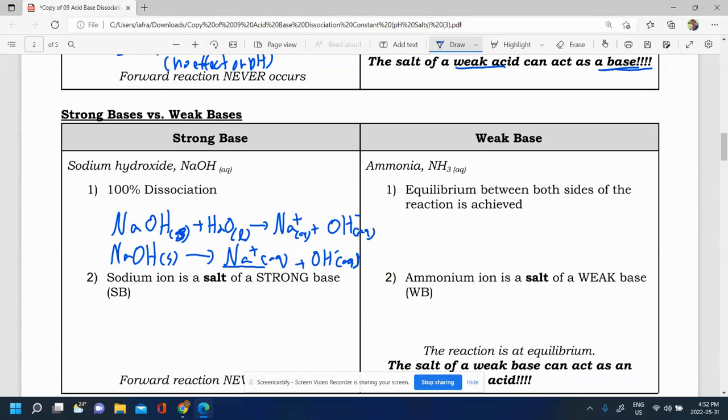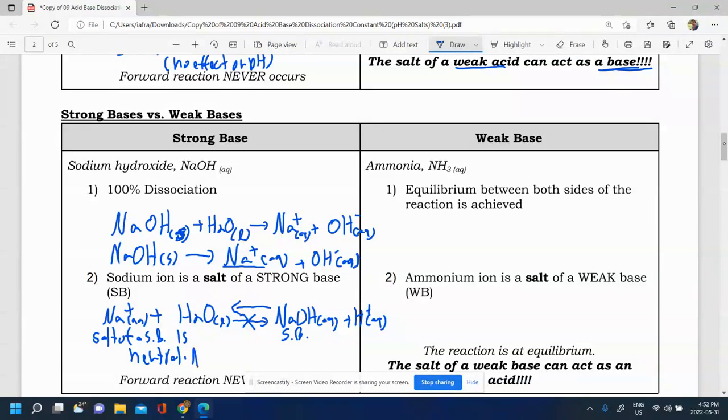So if I took this Na plus here and I made it react with water, or I tried to see if it reacts with water in hydrolysis, you'd get your NaOH because the OH is negative, plus what's left over is H plus. But you would see this is a strong base. The strong base would not want to reform. The strong base dissociates 100%, keeps the Na plus, it would never want to go back in that direction. So the Na plus, being the salt of a strong base, is neutral. No effect on pH.